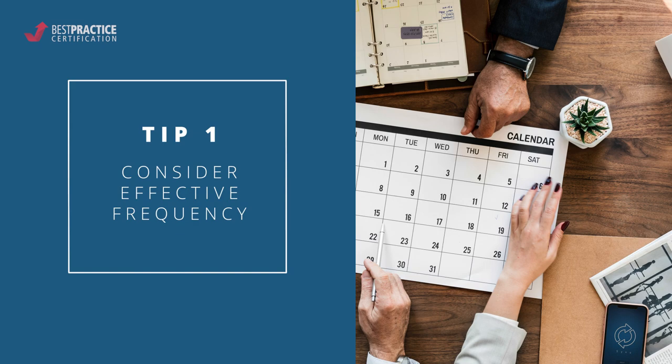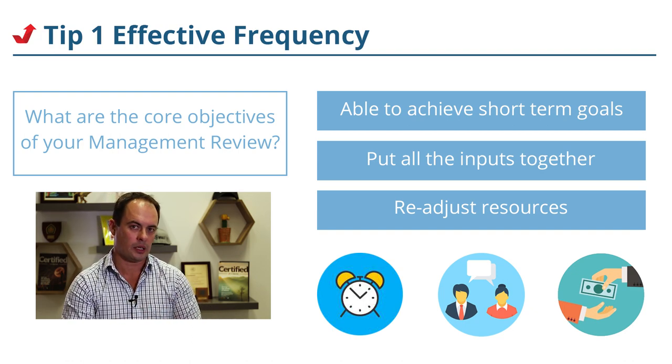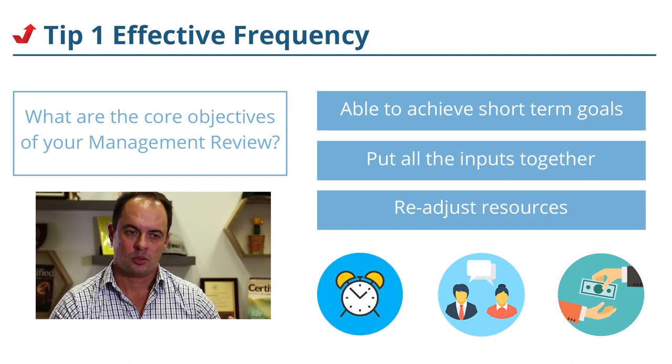You've got to get on top of your numbers in a frequency that's short enough to enable you to do small things that still track you and keep you on your journey to your goals. The core objective of management review is to put all the inputs together — how your performance is running, how you're tracking towards your goals — and the most important part is the outputs: readjusting resources, which are time, money and people, to keep making progress towards your goals.